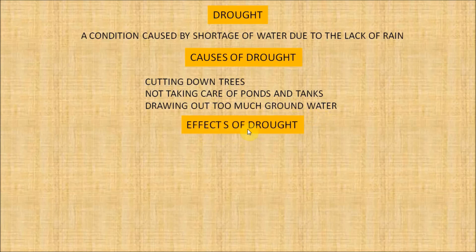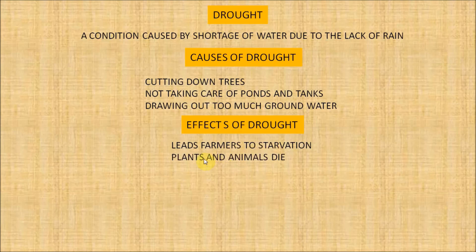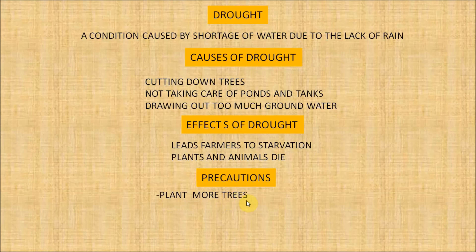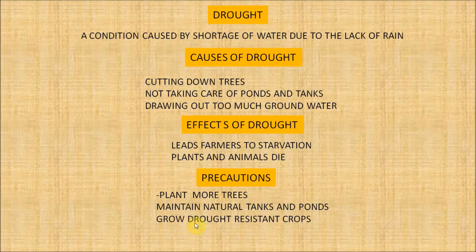Effects of drought: drought leads farmers to starvation, and plants and animals die due to little or no rain. Precautions: plant more trees to help increase rainfall, as trees also help rainwater seep into the ground and improve the water level. Maintain natural tanks and ponds, and build new ones to store rainwater. Grow drought-resistant crops such as millets and maize in drought-prone areas, and develop proper irrigation facilities.